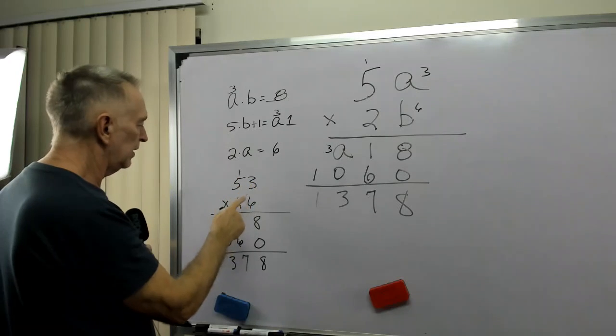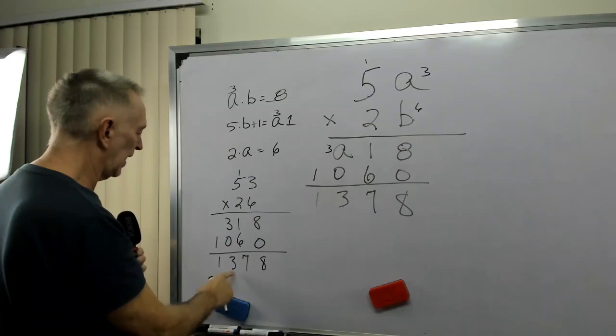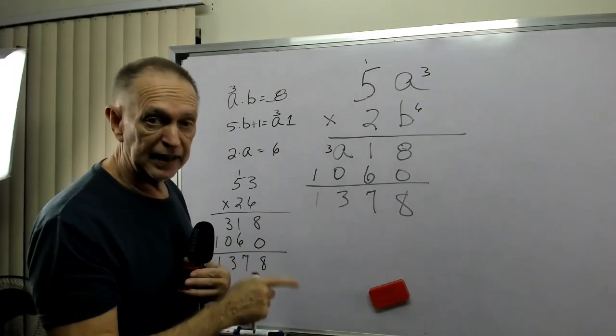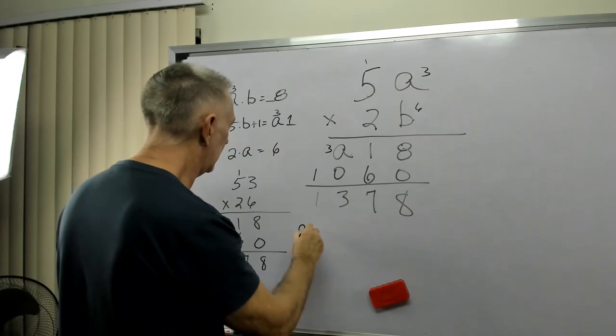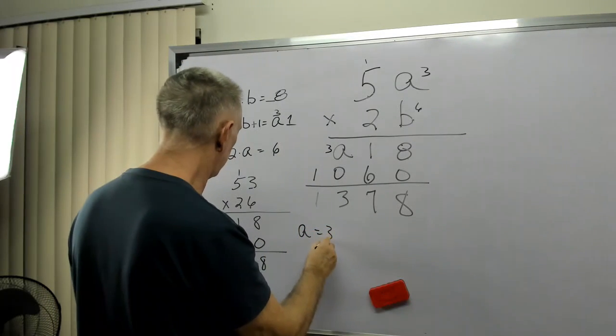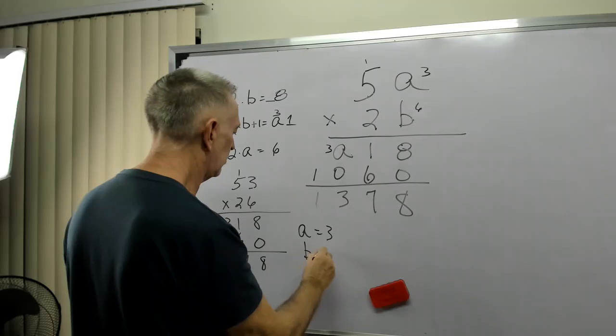So, 53 times 26 is 1,378. So, A equals 3. B equals 6.